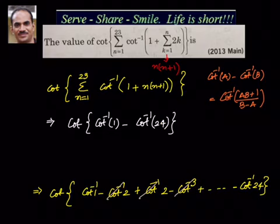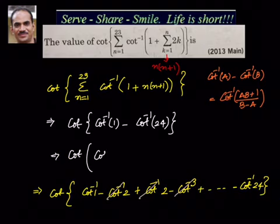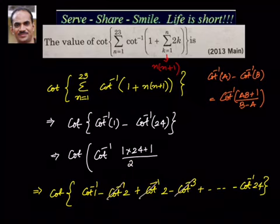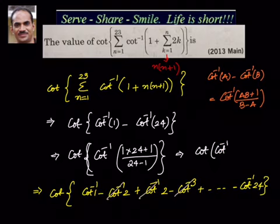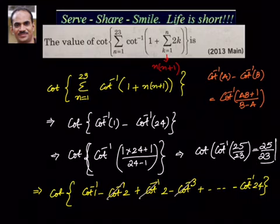Now applying the formula again, taking LHS and writing it as RHS: cot inverse A minus cot inverse B equals cot inverse(AB+1)/(B−A), with A=1 and B=24. That gives cot of cot inverse of (1×24 + 1)/(24 − 1) = cot of cot inverse of 25/23. The cot and cot inverse cancel, giving the answer as 25/23.